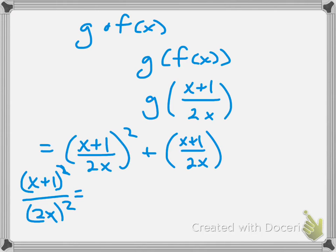My numerator will require me to FOIL. So, I have x plus 1 times x plus 1, which will give me x squared plus 2x plus 1. My denominator, when I square 2 to give me 4 and x to give me x squared. Now, my second term, the x plus 1 over 2x, there's nothing I can really do to it. So, I'm just going to leave it like so.